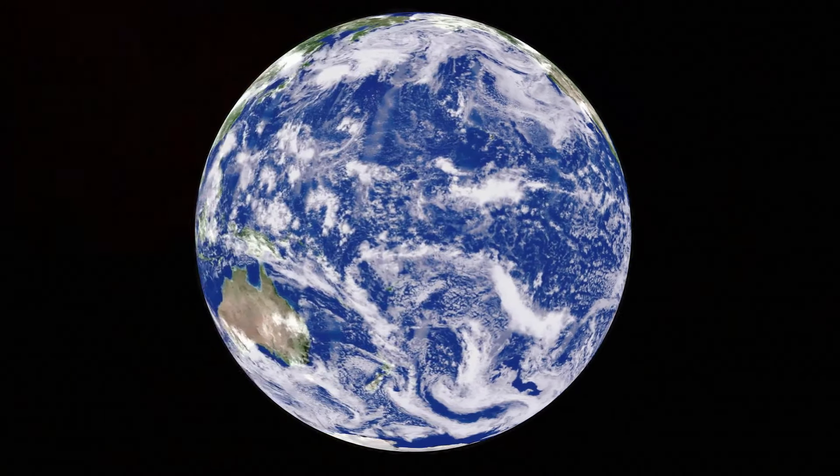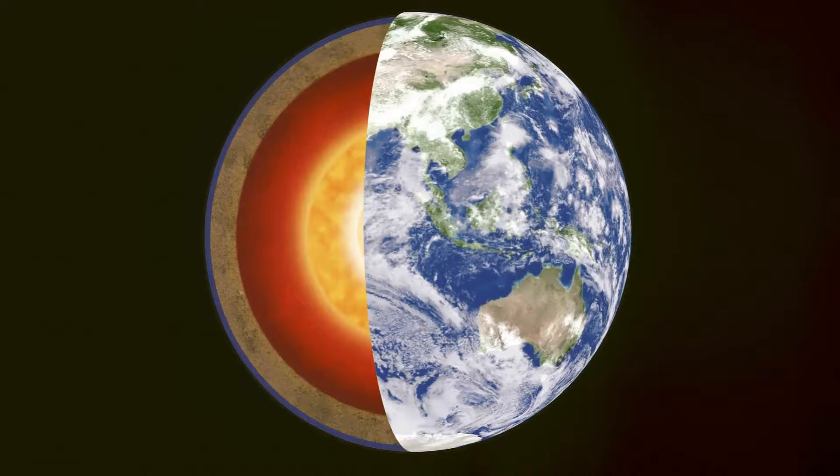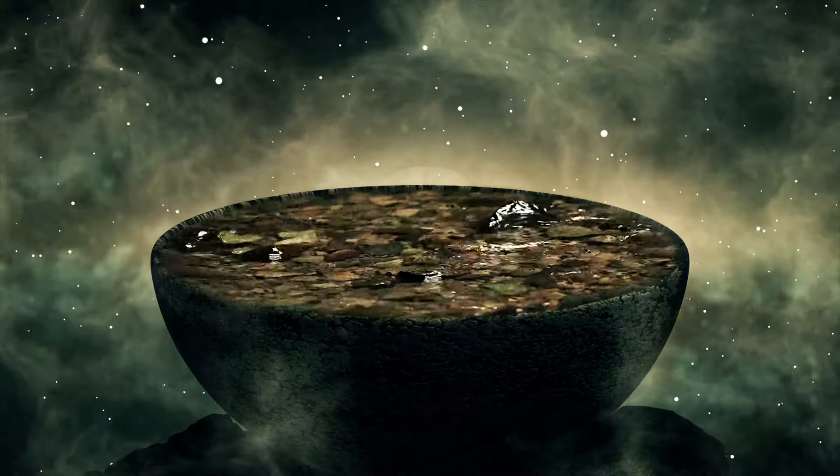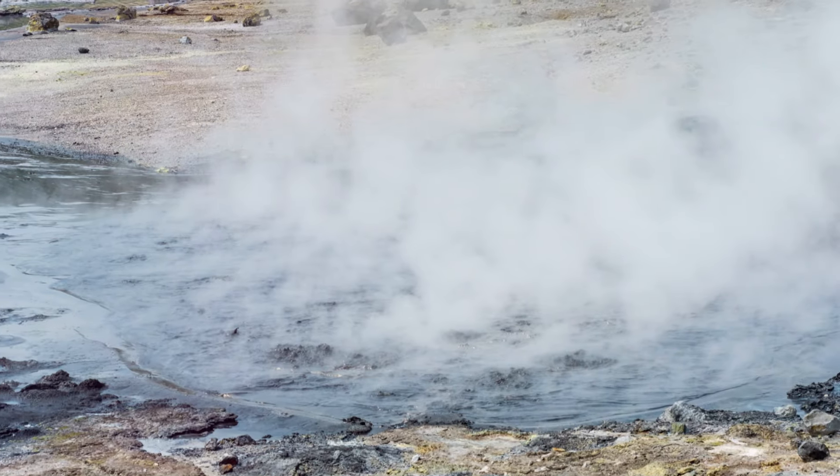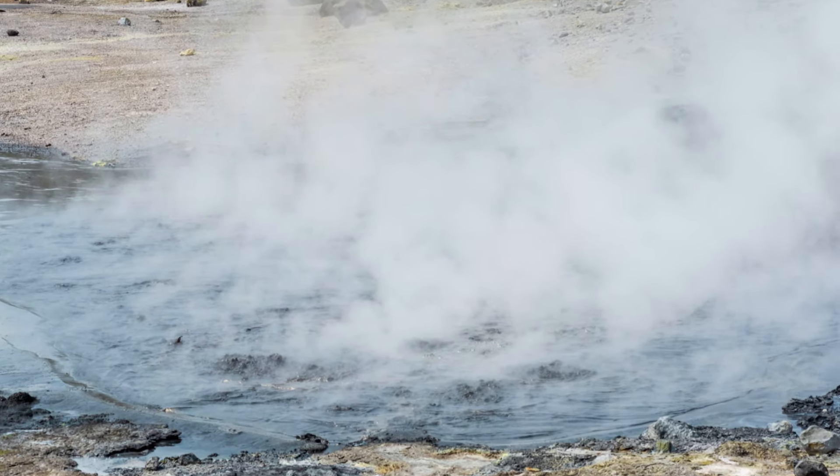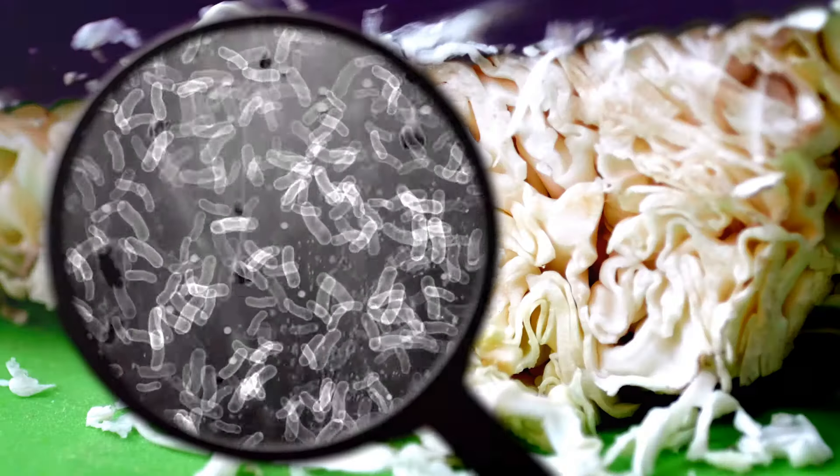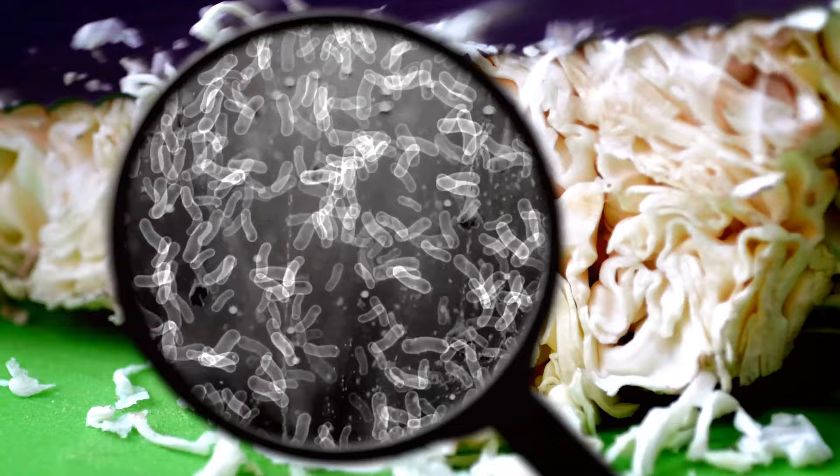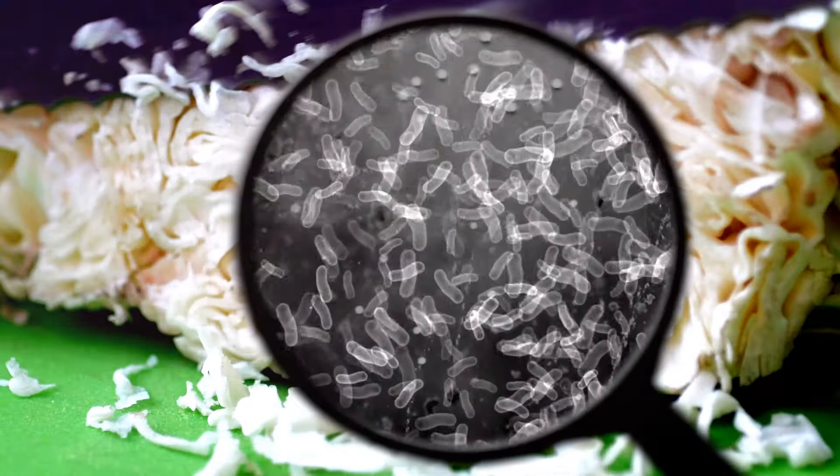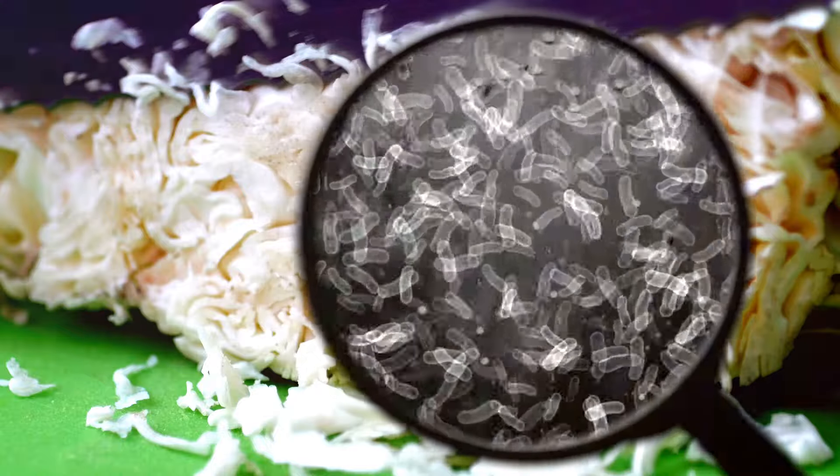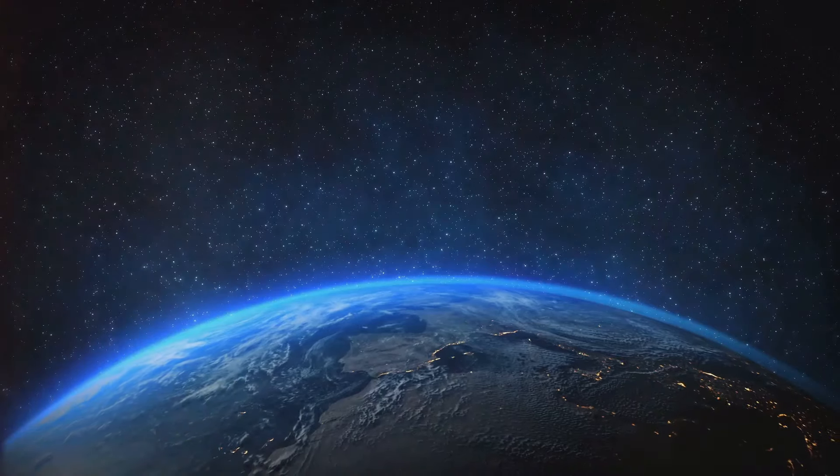As our young planet cooled, it became a fertile ground for the emergence of life. The interplay of water, minerals, and energy created a primordial soup, setting the stage for the first living organisms to appear. These simple lifeforms evolved over millions of years, adapting to their environment and diversifying into the myriad species we see today.